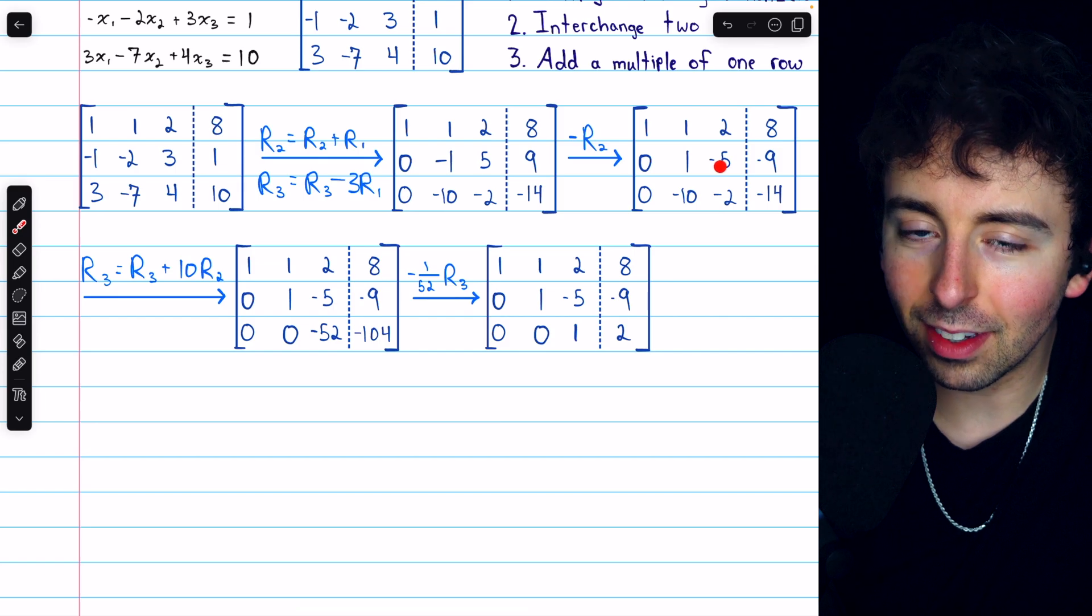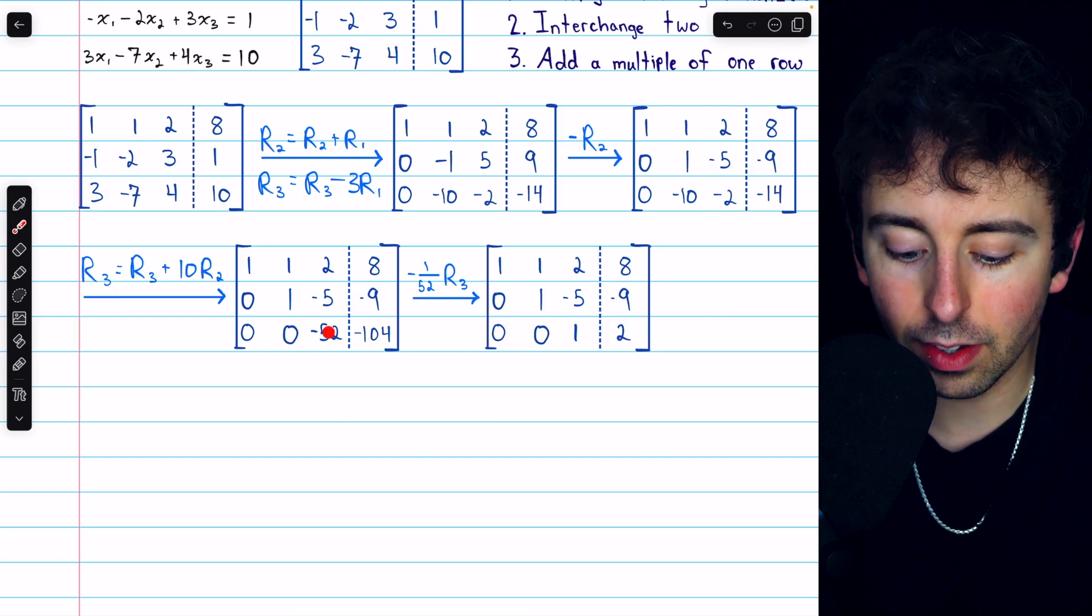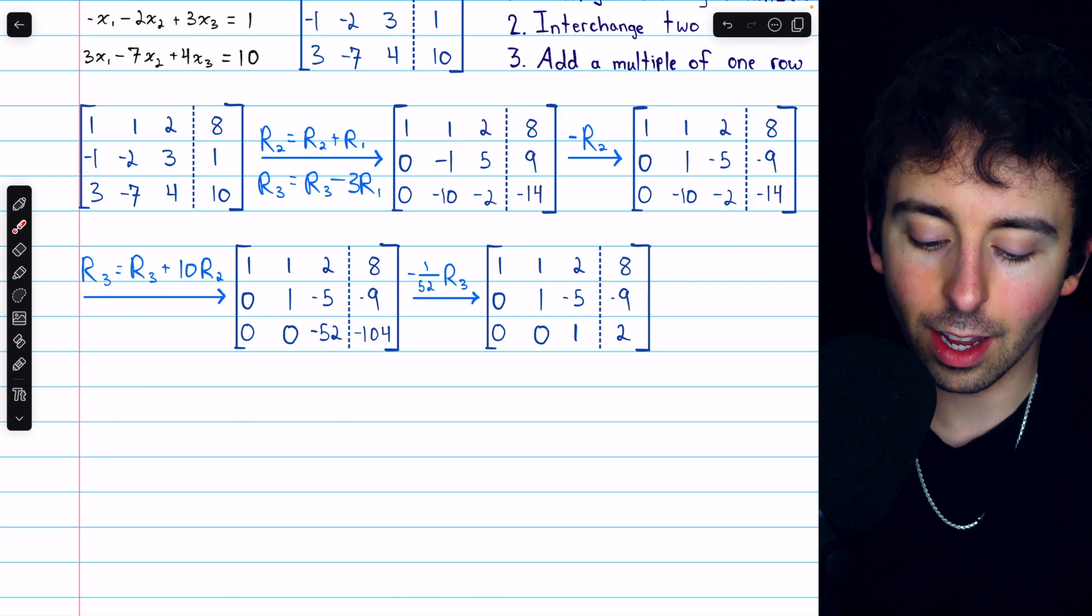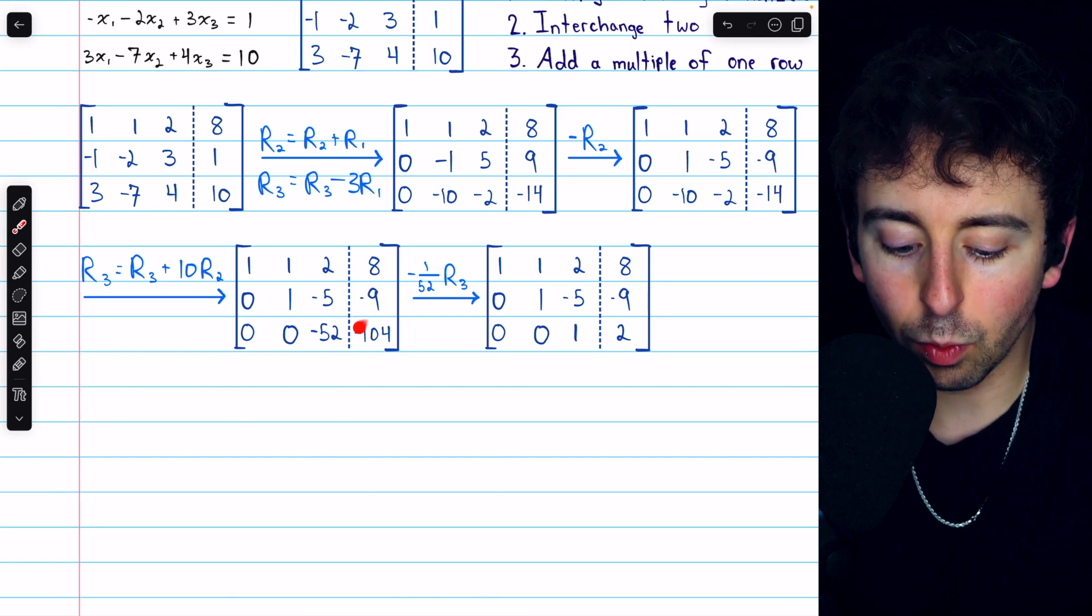Negative 10 plus 10 times 1 is 0. Negative 2 plus 10 times negative 5 is negative 52. And negative 14 plus 10 times negative 9 is negative 104.